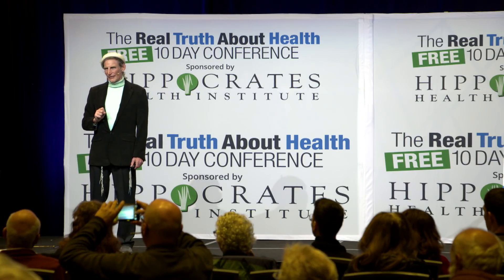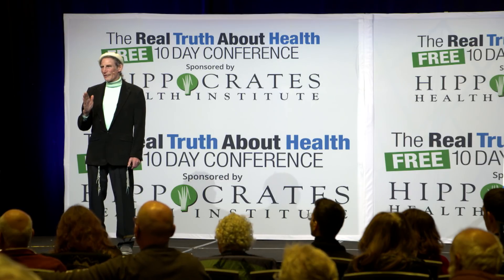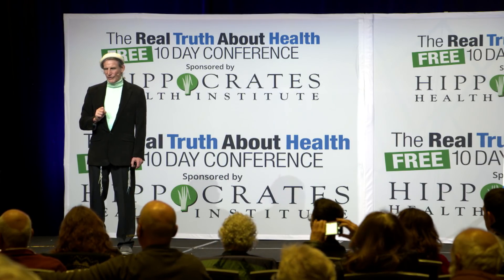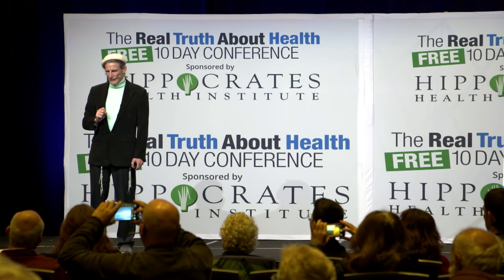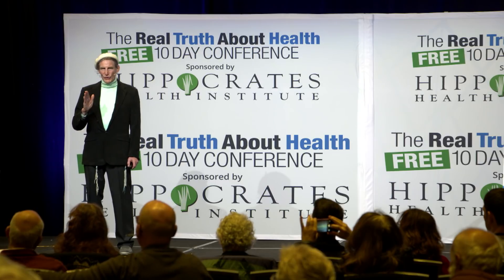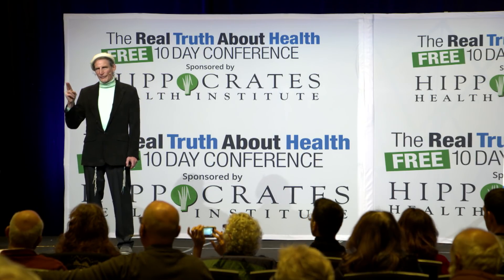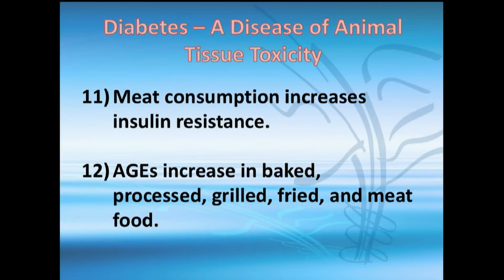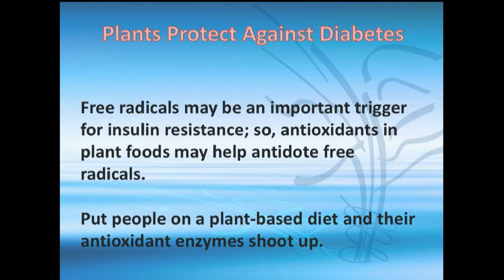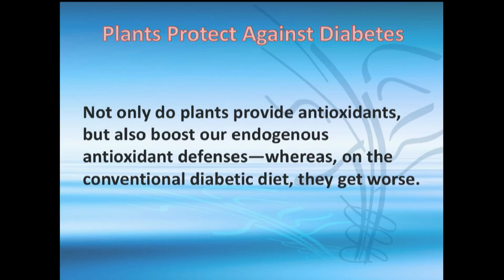Acidity also plays a role — it increases the rate of diabetes by 56%. Regarding AGEs, food preparation matters too: if you bake, process, or grill food, you increase the AGE content. Free radicals are an issue particularly with meat. On a plant-based diet, antioxidants increase significantly because plants are high in phytonutrients and antioxidants.